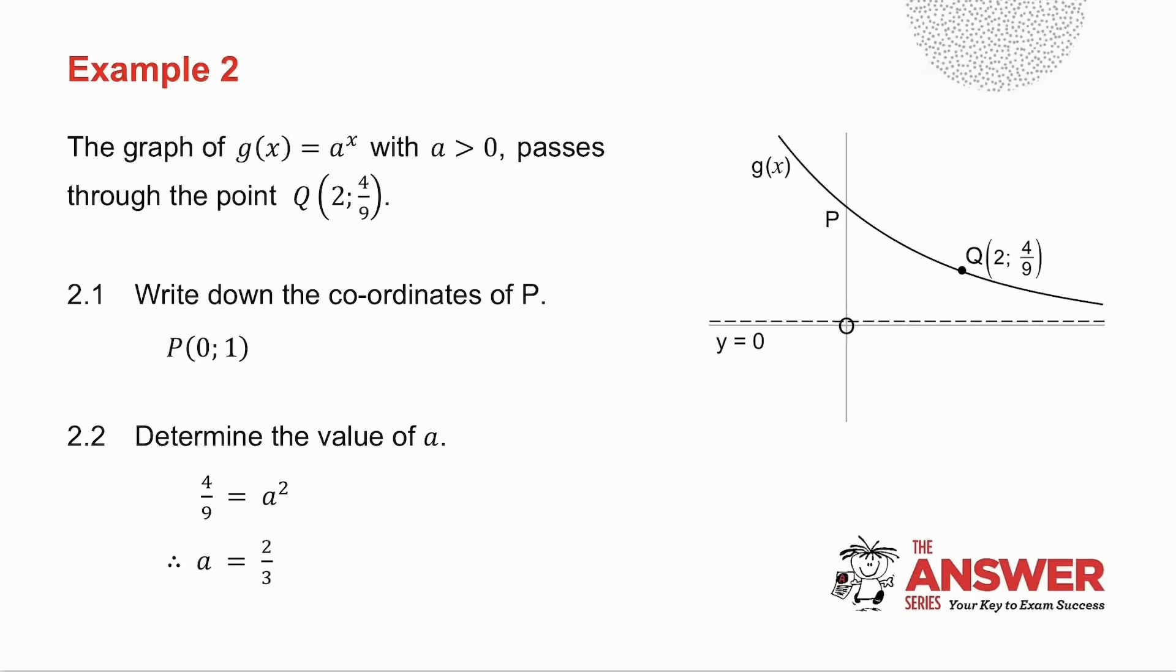Now that makes perfect sense. If I look at my graph, the shape of my graph is like that, which means a is supposed to lie between 0 and 1. I've got a value of 2 thirds, so it makes sense. So always, when you do graphs, look at the graph to see whether your answer makes sense or not.